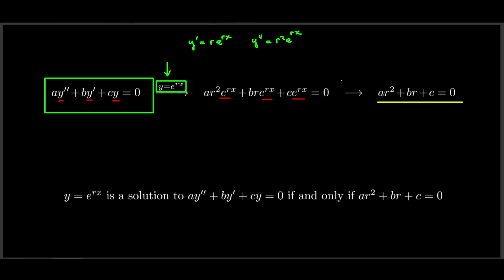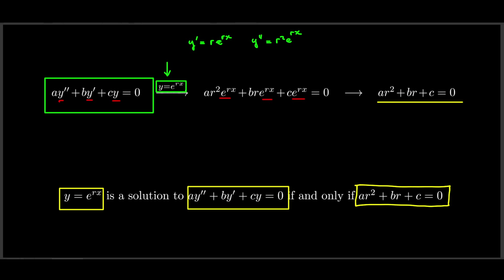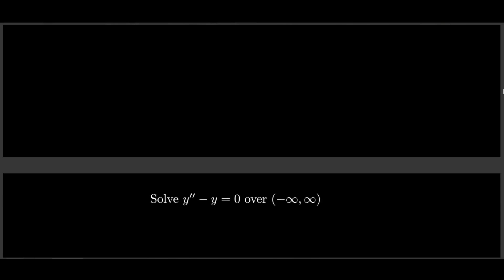The main thing to see is that this is completely reversible: e^(rx) is a solution to our differential equation if and only if r is a root of the characteristic quadratic equation ar² + br + c = 0. So in order to find solutions to these kinds of equations, it's enough to solve certain quadratic equations. Let's see how this works on an example.